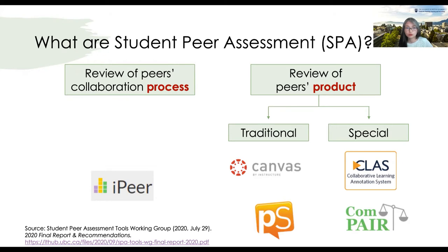iPeer has been widely used to support this type of student peer assessment. Another type of student peer assessment is actually on peers' products. It can be a writing assignment, oral presentation, or a multimedia product. It can be used for individual or group assignments. Students submit their work — either a draft or final submission — and use the instructor's rubric and assessment criteria when reviewing peers' products. At UBC, the Canvas peer review tool and Peer Scholar have been used to support this traditional way of using peer assessment.